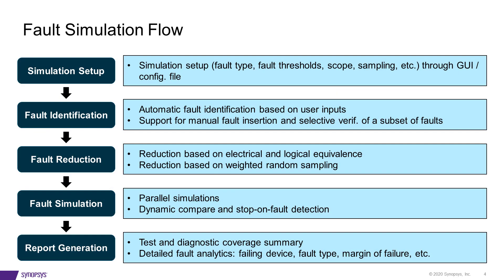This is the overview of the fault simulation flow. It includes the following five major steps: simulation setup, where the user can set up simulation parameters through GUI and config file; fault identification, which supports both automatic fault identification and manual fault insertion. To speed up fault simulation, fault reduction is performed based on electrical and logical equivalents or weighted random sampling. After reduction, a large number of SPI simulations are launched in parallel.